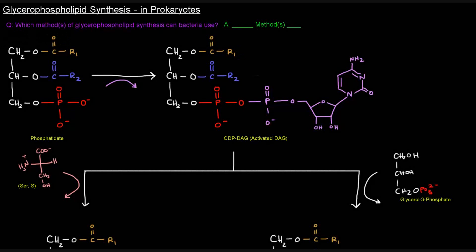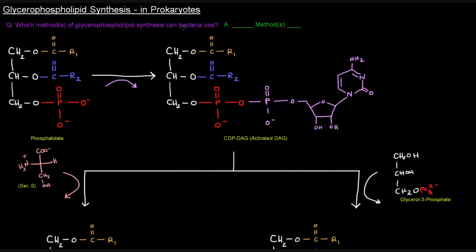Which methods of glycerophospholipid synthesis can bacteria or prokaryotes use? Well, there were two methods, one and two, but bacteria, prokaryotes, can only use method one.